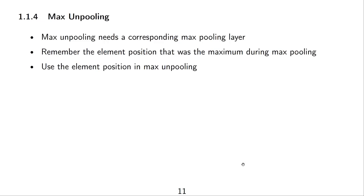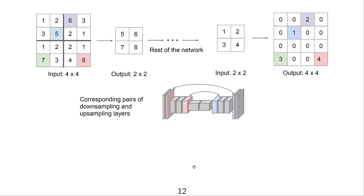So, max-unpooling is mainly here for legacy reasons. Max-unpooling needs a corresponding max-pooling layer. And what we're doing is we remember the element position that was the maximum during the max-pooling and we use this element position in max-unpooling. So, if we upsample with max-unpooling, there needs to be a down-sampling layer that corresponds to it where we can remember the element position from. So let's look at this.